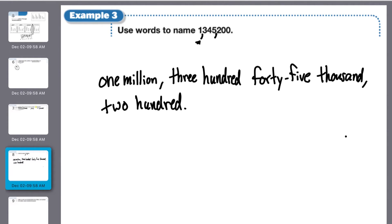Done. A lot of people like to put an and right here. No and necessary. You only put an and in if you have a decimal number. Okay, so one million, three hundred forty-five thousand, two hundred. That's it.